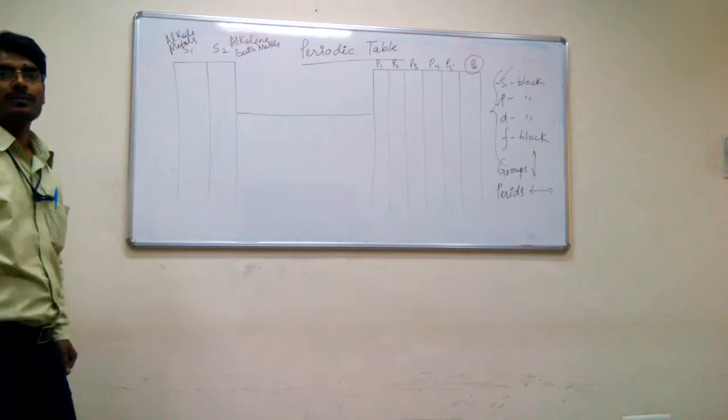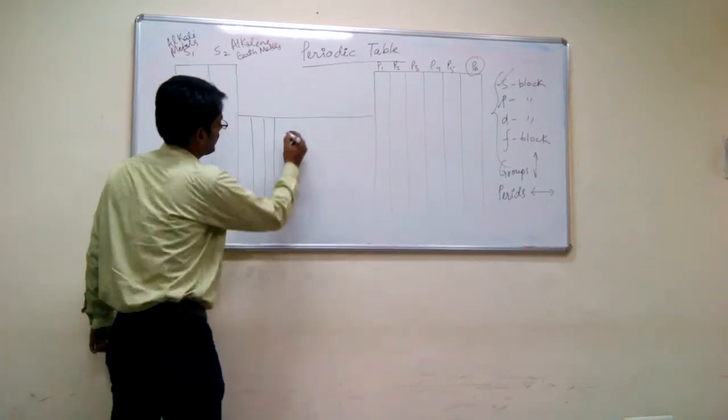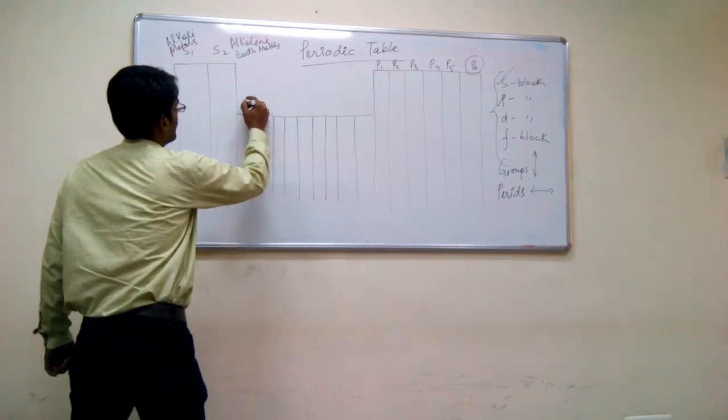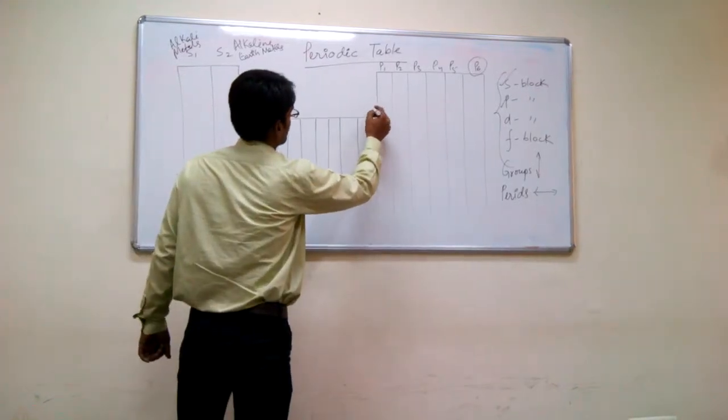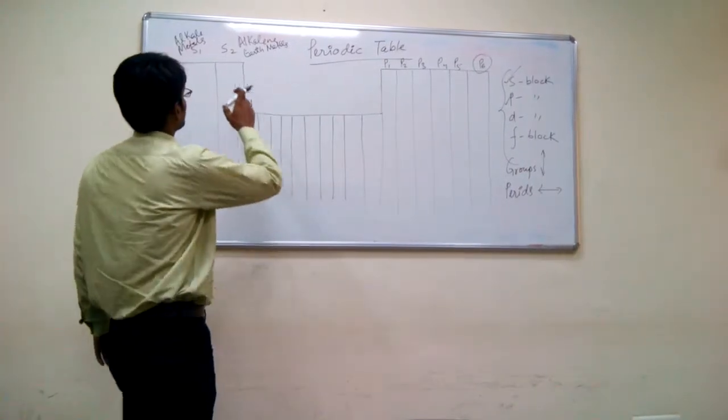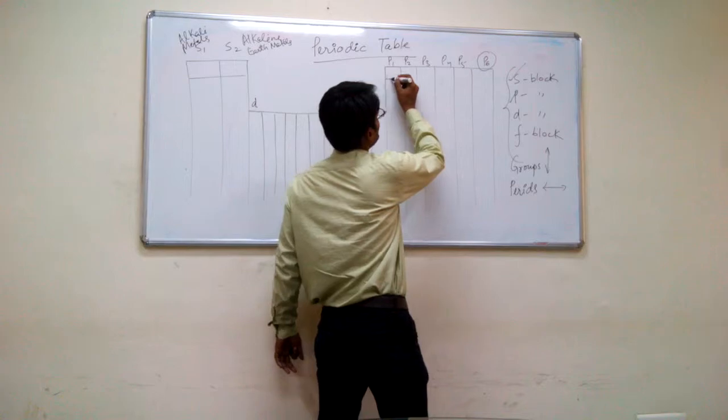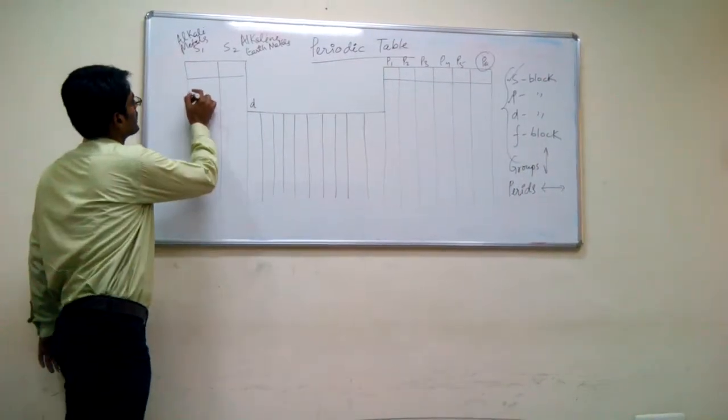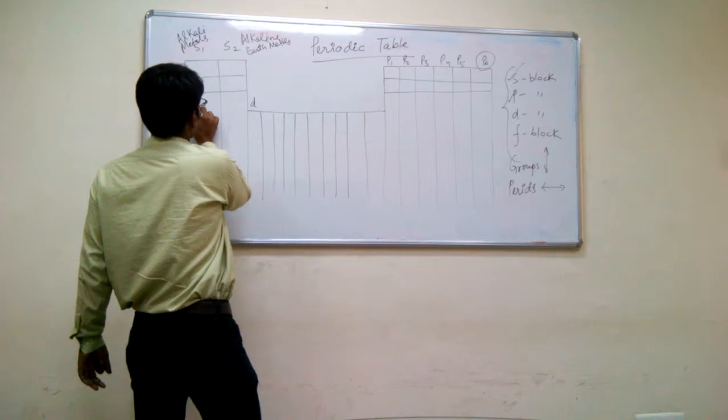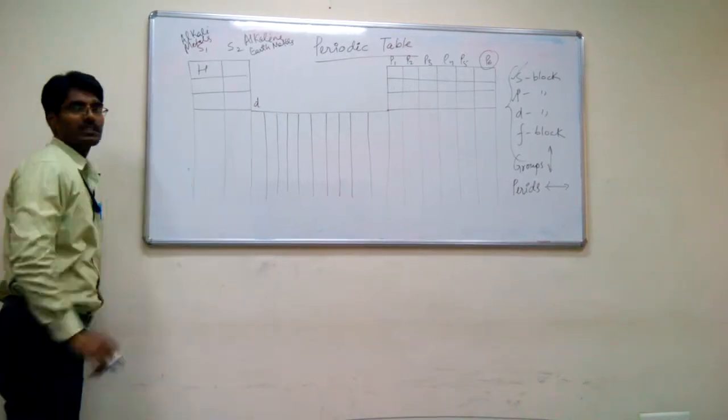In the D system, we will have ten columns: D1, 2, 3, 4, 5, 6, 7, 8, 9, and 10. This is our first period that we will complete from S1 to P6. Second period, we will move from this to this. Then comes third period. If you see, the first element is hydrogen. Hydrogen has atomic number one.